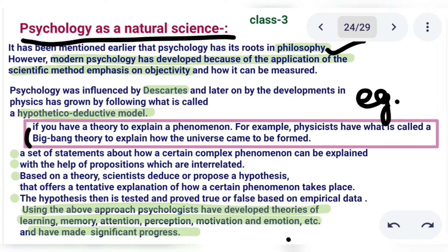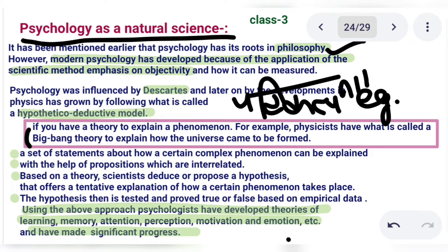Psychology grew by following what is called the hypothetical-deductive model. Hypothetical means what in Hindi is called 'Parikalpana' — a kind of imagination or assumption. So we try to make some theory based on that.